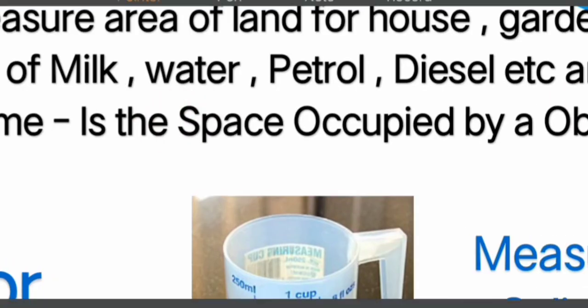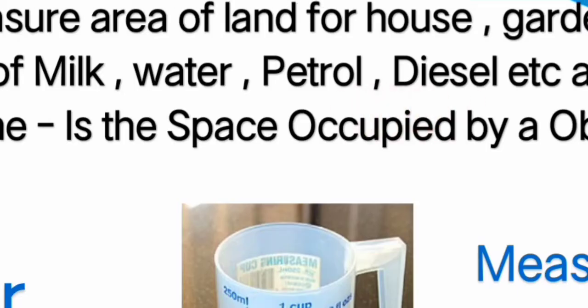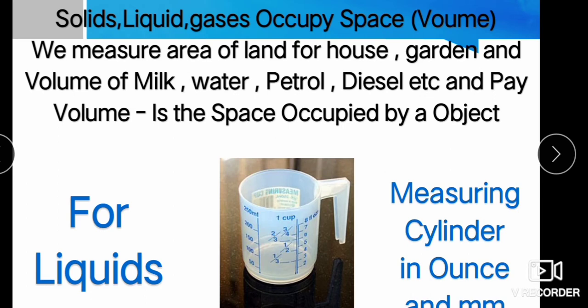There are three states of matter: solids, liquids, and gases. They occupy space, which is known as volume. We measure the area of land for a house or garden, and volume of milk, water, petrol, diesel, etc.